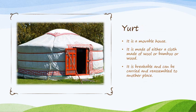Now, children, we have another type of house called a Yurt. It is a movable house — it can be moved from one place to another. It can be dismantled, carried, and then reassembled at another place, because it is made up of either cloth made of wool, bamboo, or wood. So when you move to another place, you can break this house down, carry the material, and reassemble the same house at the new location.